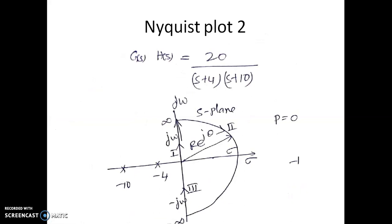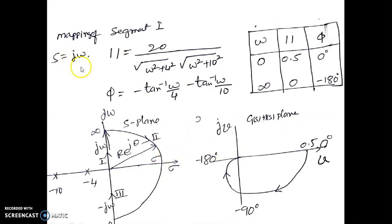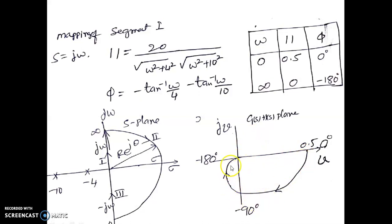Let us move to the next transfer function: 20 divided by (s plus 4)(s plus 10). Again, no poles are enclosed by the Nyquist contour, so P is equal to 0. For segment 1, substitute s equals j-omega to get the magnitude and phase equations. When omega equals 0, the magnitude is 0.5 at 90 degrees. As omega tends to infinity, the magnitude tends to 0 at minus 180 degrees. The plot passes through minus 90 degrees at some magnitude before reaching the origin at minus 180 degrees.